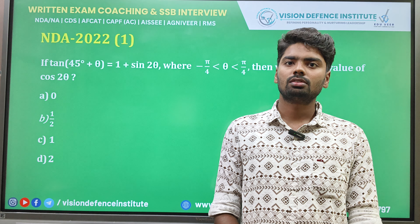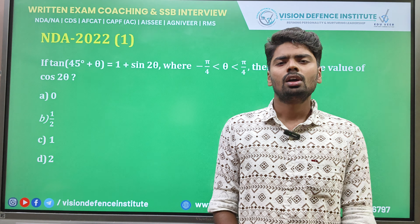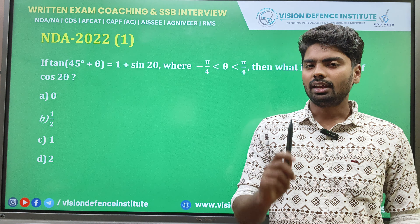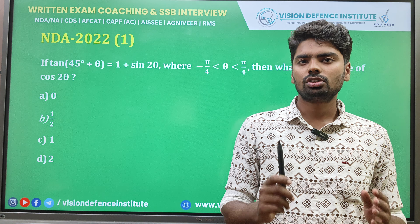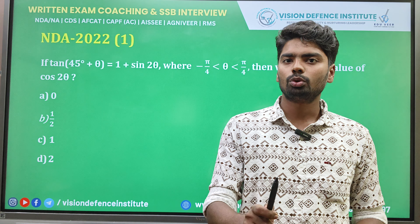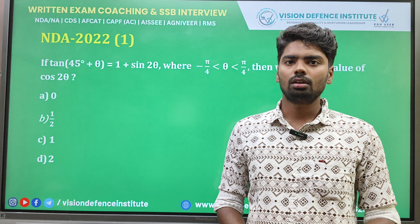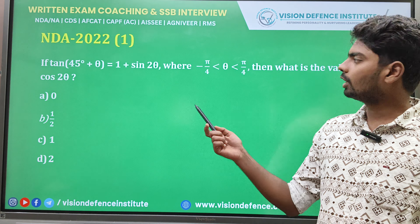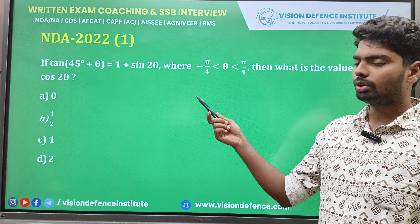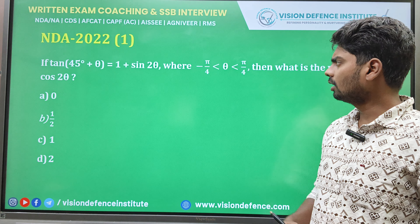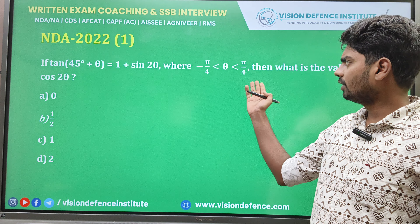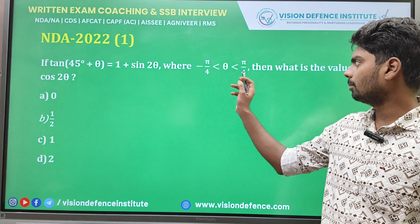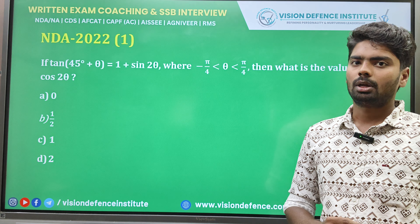This is Vishnu from Vishen Defence. In this video, we will solve an NDA exam problem using a shortcut. The problem is: f(tan(45 + θ)) = 1 + sin2θ, with the constraint that θ is between -π/4 and π/4.